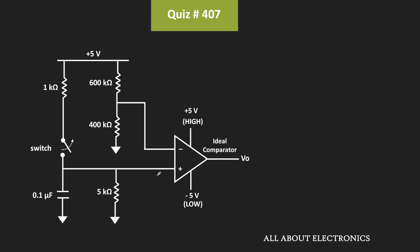Initially, this switch was in the closed condition. At t = 0-, the switch was closed and since the circuit had been in this condition for a long time, the circuit was already in steady state. Therefore, at t = 0-, the capacitor acts as an open circuit, meaning the voltage across the capacitor equals the voltage across the resistor, which we can find using the voltage divider. Since the comparator is ideal, no current flows into it.